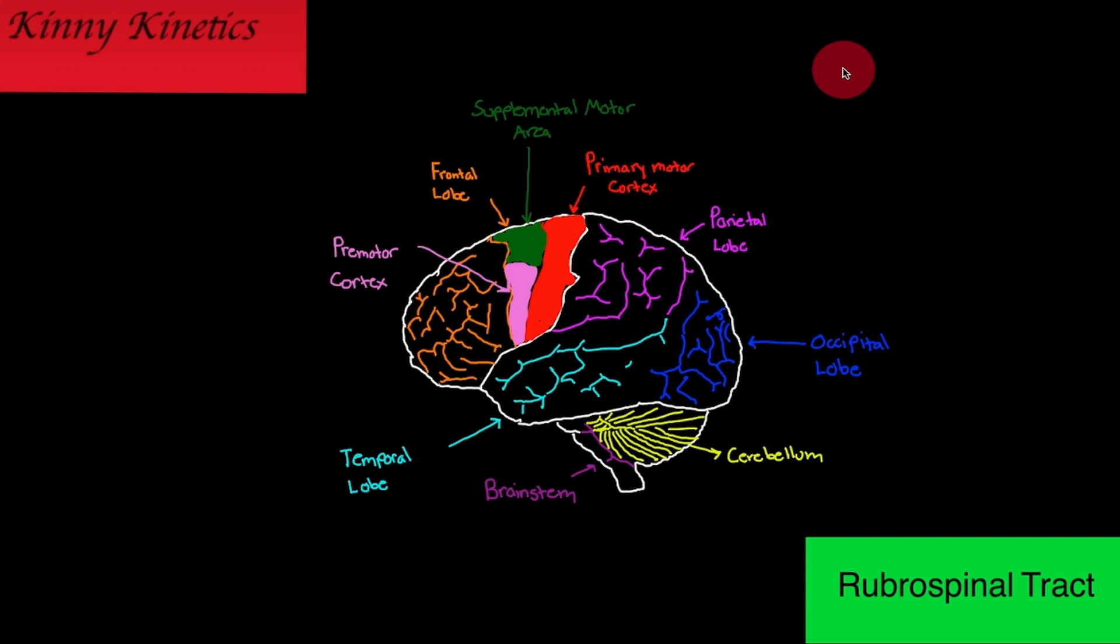The rubrospinal tract is a part of the indirect motor pathways, which also include the reticulospinal and vestibulospinal tracts. These tracks send nerve impulses from the brain stem to cause automatic movements and help coordinate body movements.